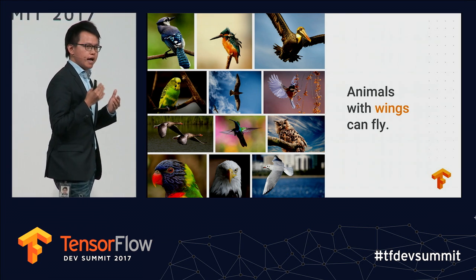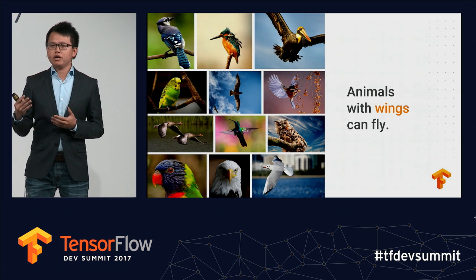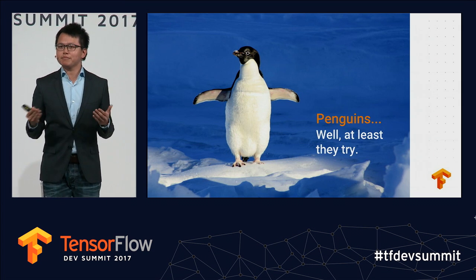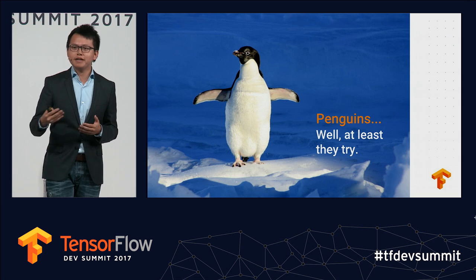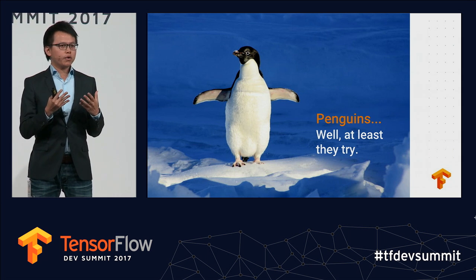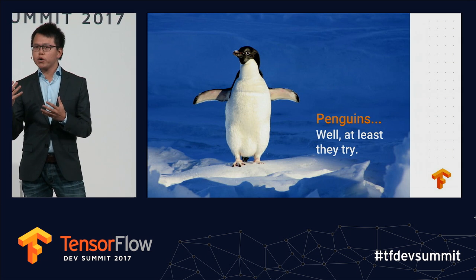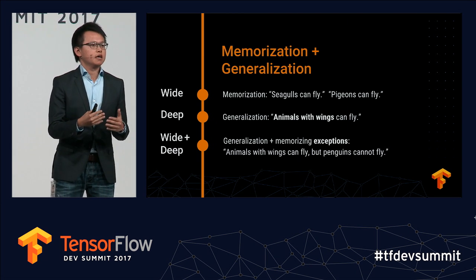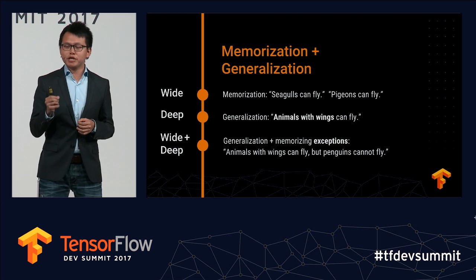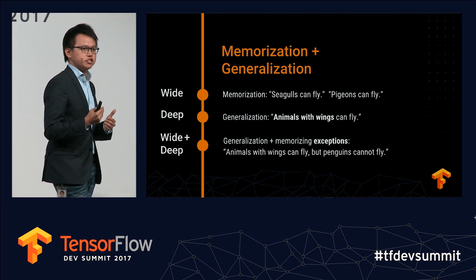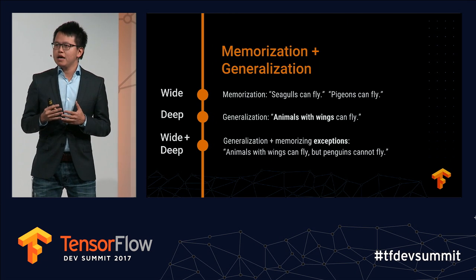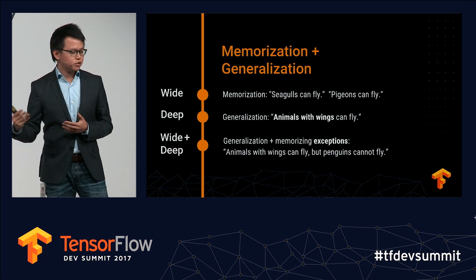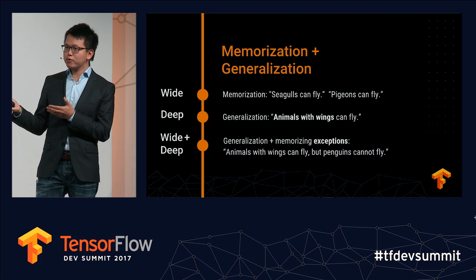However, generalization has its own limitations because it doesn't always work in all cases. For example, penguins — well, at least they try, but the best they can do is some sort of free fall into the ocean. So the real power lies in combining memorization and generalization. This is very similar to what we observe in the progression from a pure wide model for memorization to a pure deep model for generalization, and finally combining wide and deep — which is generalization plus memorizing exceptions: animals with wings can fly, but penguins cannot fly.